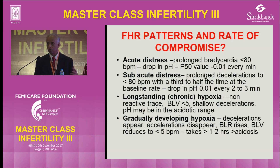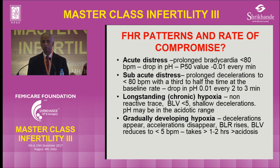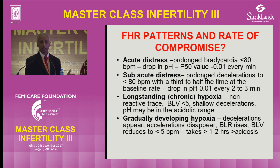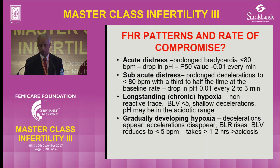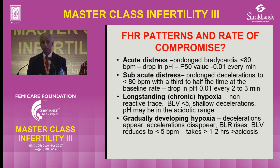The third category is long-standing hypoxia: the baby is likely already acidotic or hypoxic before admission. There will be no accelerations, variability will be reduced, and there will be shallow late decelerations. Around 25% of these babies may already be acidotic. They typically have telltale signs: meconium, infection, IUGR, post-term, absent fetal movements. You must combine the clinical picture with the trace and decide how quickly to act.